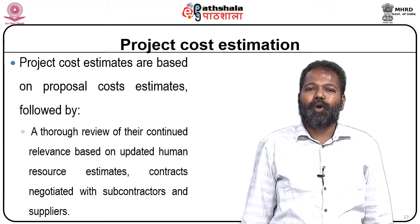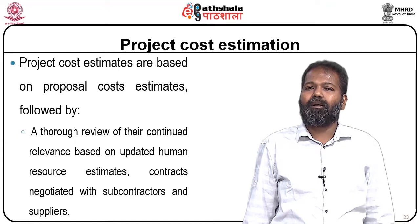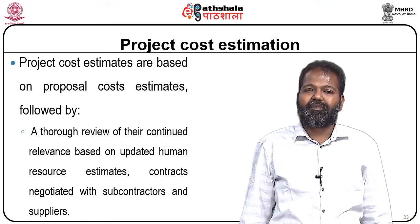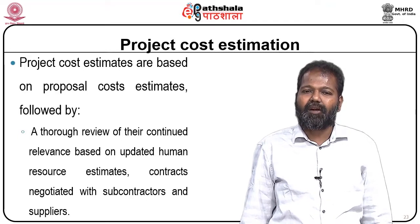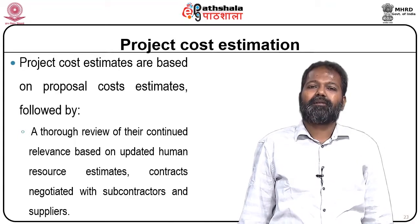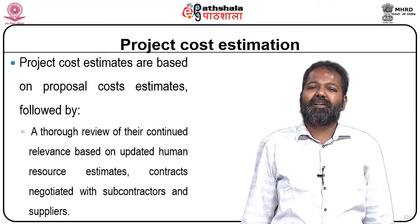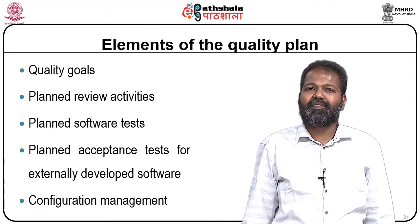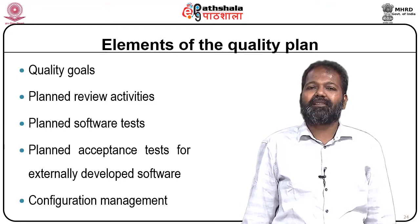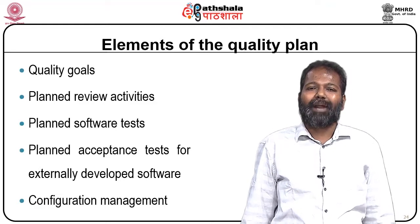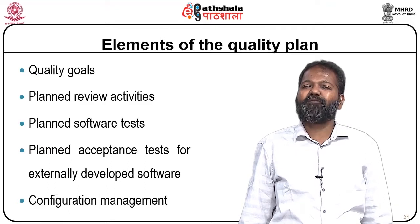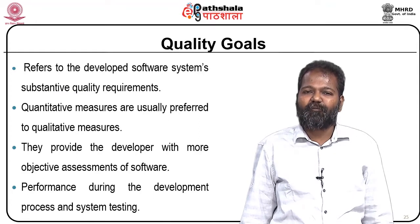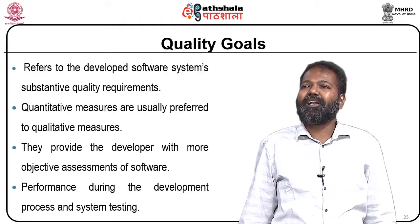Project cost estimates are based on proposal cost estimates, followed by a thorough review of their continued relevance based on updated schedules and human resource estimates, as well as contracts negotiated with subcontractors and suppliers. The elements of the quality plan include quality goals, planned review activities, planned software tests, planned acceptance tests for externally developed software, and configuration management. Quality goals refer to the developed software system's substantive quality requirements.